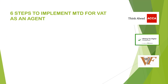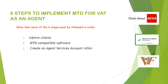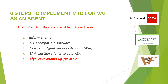As a reminder, here are the six steps to implement MTD for VAT as an Agent. Note that each of the six steps must be followed in order. Step 1: Inform Clients. Step 2: MTD Compatible Software. Step 3: Create an Agent Services Account. Step 4: Link Existing Clients to your ASA. Step 5, which we are going to look at: Sign your Clients Up for MTD. And finally, Step 6: Linking your Software to HMRC.